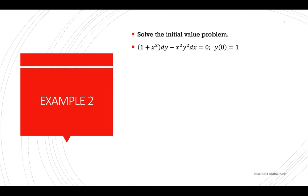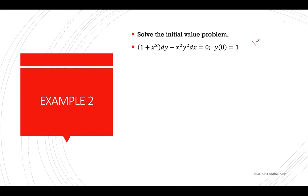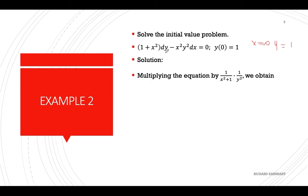For Example 2, we have an initial value problem where when x equals 0, y equals 1 — these are your initial conditions. We separate variables by multiplying by 1 over (1 plus x squared) to eliminate it from the dy term, and by 1 over y squared to eliminate y squared from the dx term. This gives dy over y squared plus x squared over (x squared plus 1) dx equals 0, which is integrable.